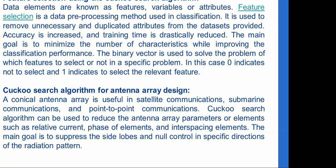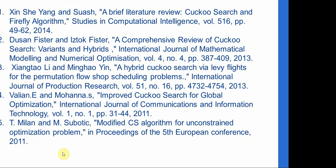Another application is antenna array design. A canonical antenna array is used in satellite, submarine, and point-to-point communications. The Cuckoo Search Algorithm reduces antenna array parameters such as element current, phase, and interspacing, with the main goal of suppressing side lobes and null control in specific directions. References for further study are also provided.